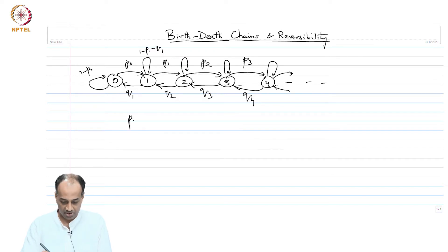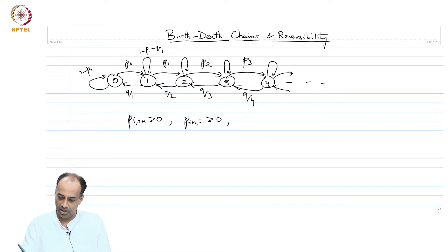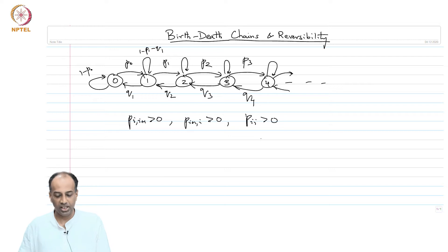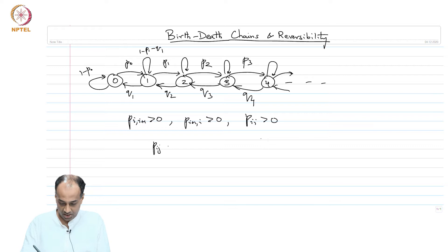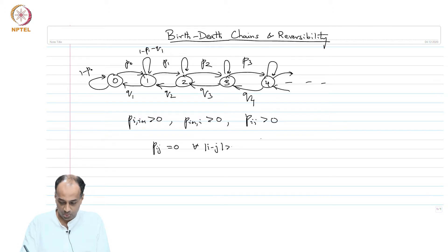We are allowed to have transitions only between states i and i+1, and i+1 and i, and self-transitions are also allowed. For any i, P(i, i+1), P(i+1, i) can be positive, P(i,i) can be positive. But P(i,j) is equal to 0 for all i,j that differ by more than 1.